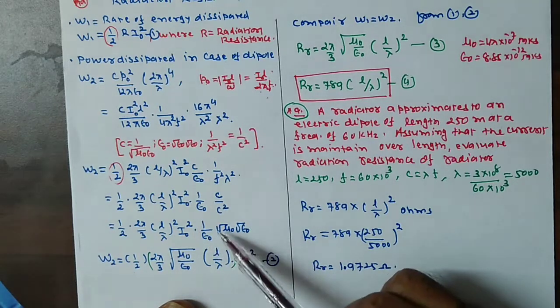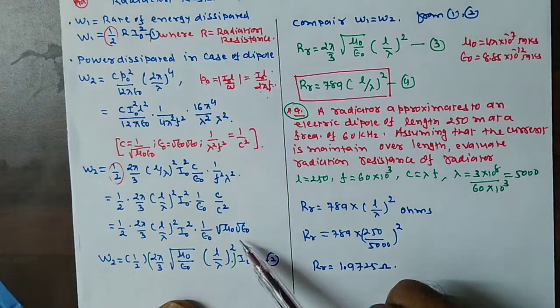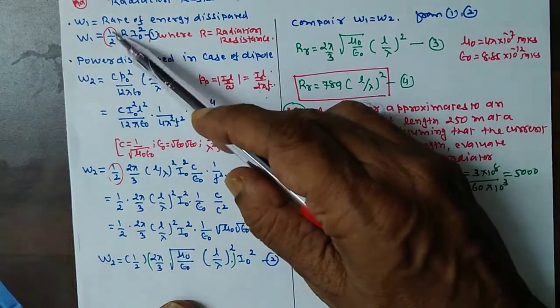This will be equal to μ0 divided by ε0 square root of this. Now we compare both equations. Both equations, this is 1 half I0 square.